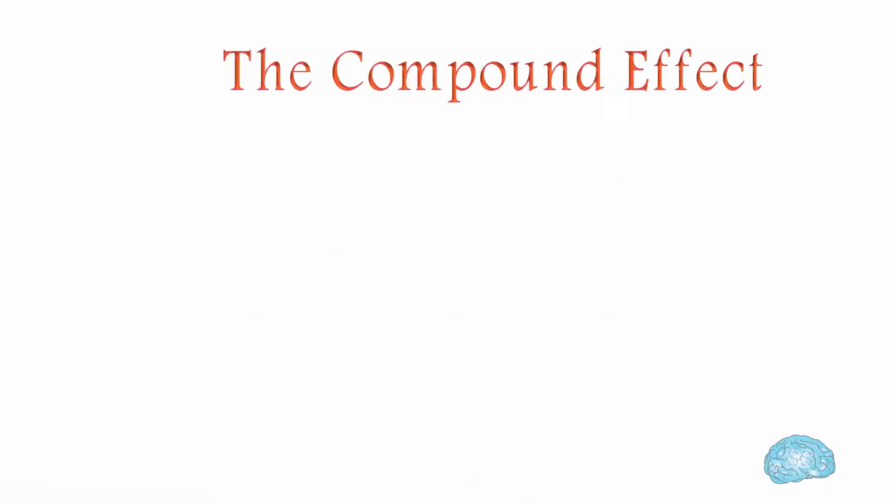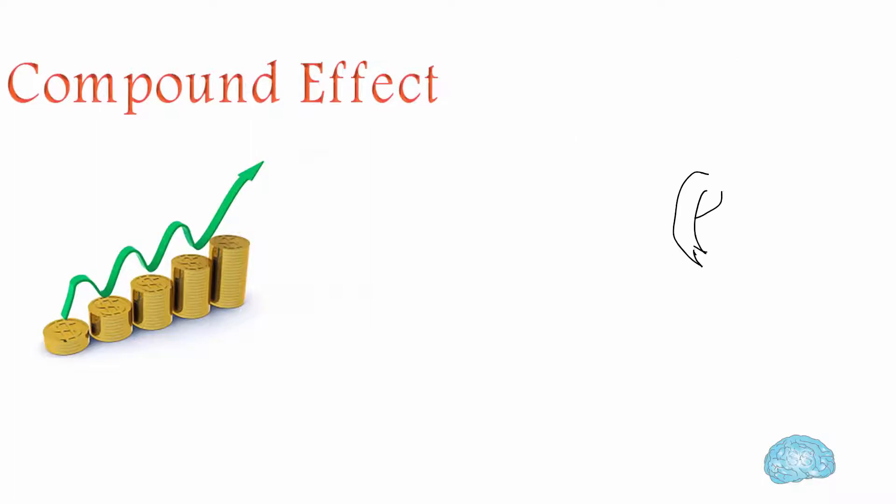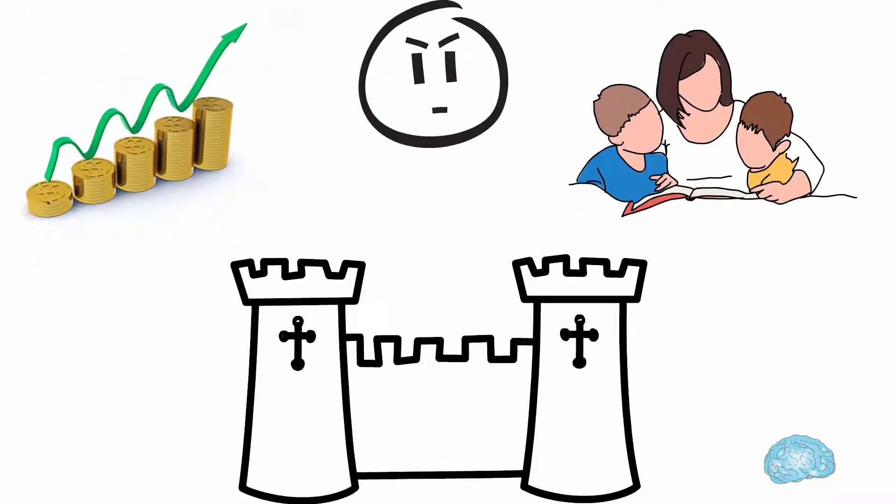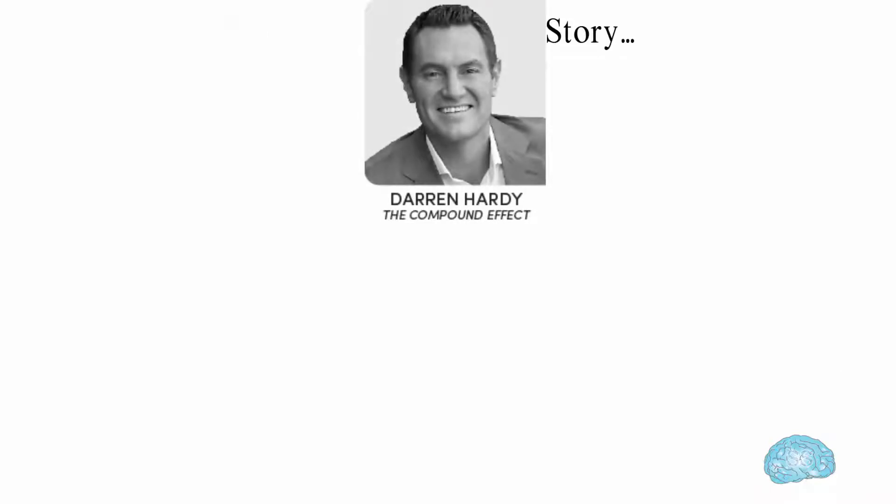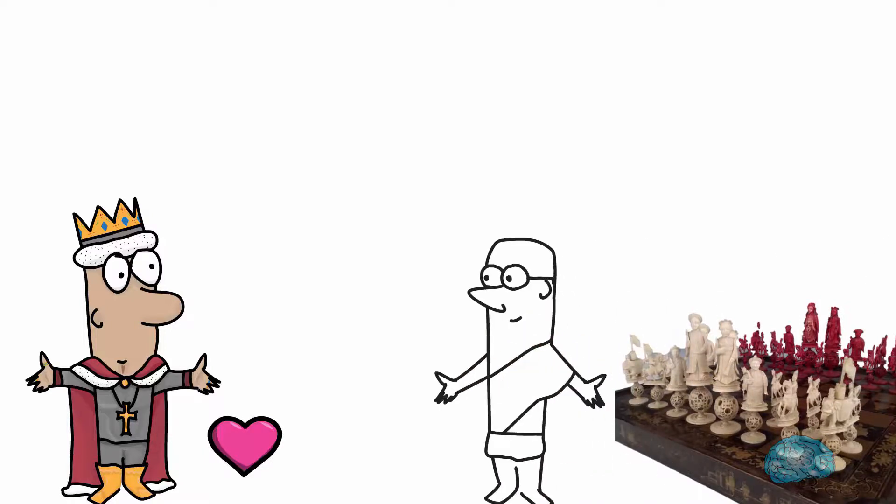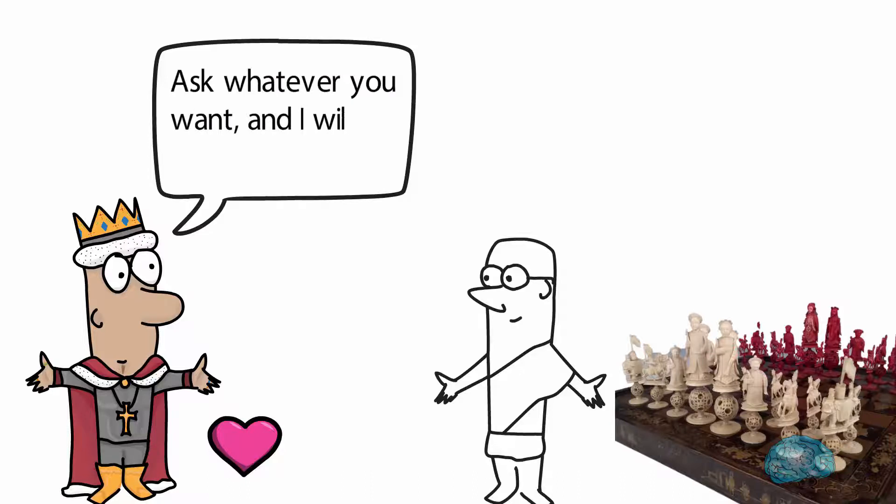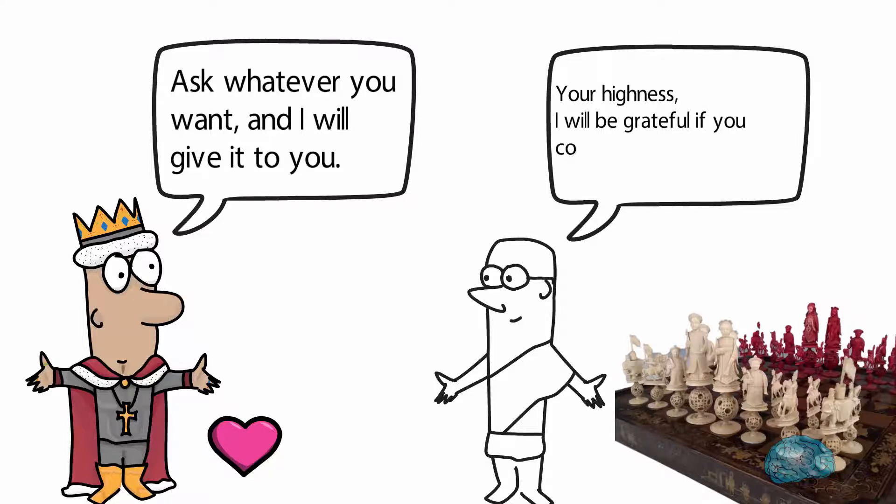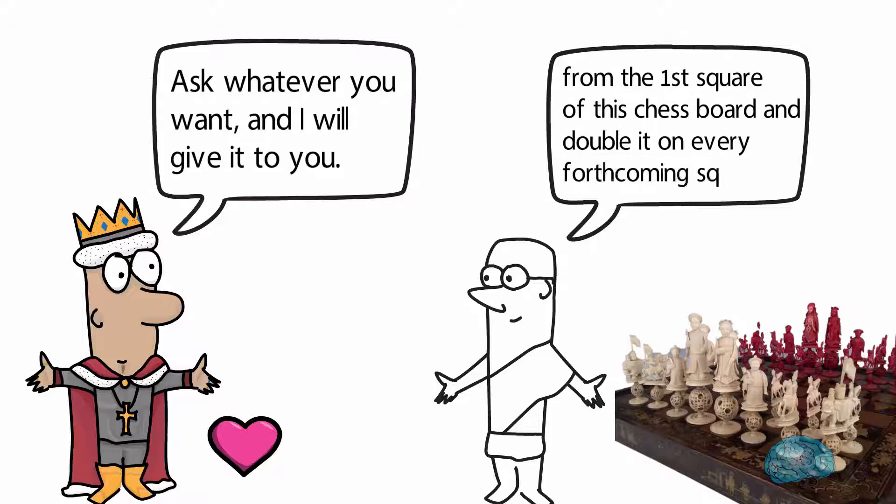The compound effect is not something that has been discovered recently. This has been noticed since ancient times. Author Darren explains a story in this book where a king really likes the chess game, so he calls the creator of that game and commands him: ask whatever you want and I will give it to you. The person said: Your Highness, I will be grateful if you give me a grain of rice from the first square of this chess board and double it on every forthcoming square.